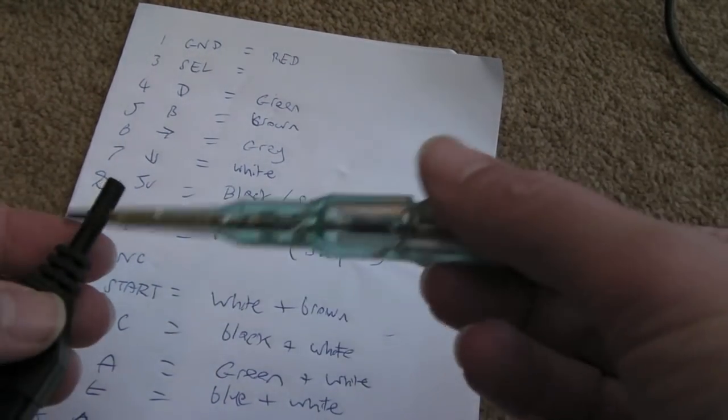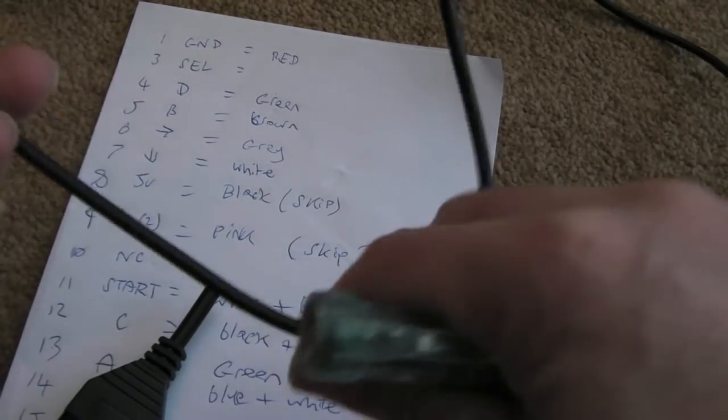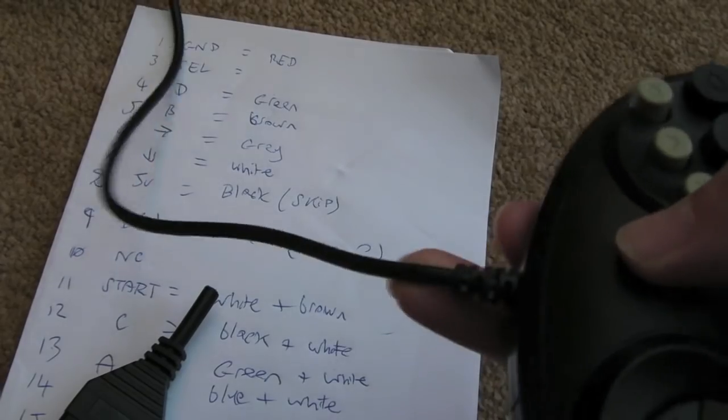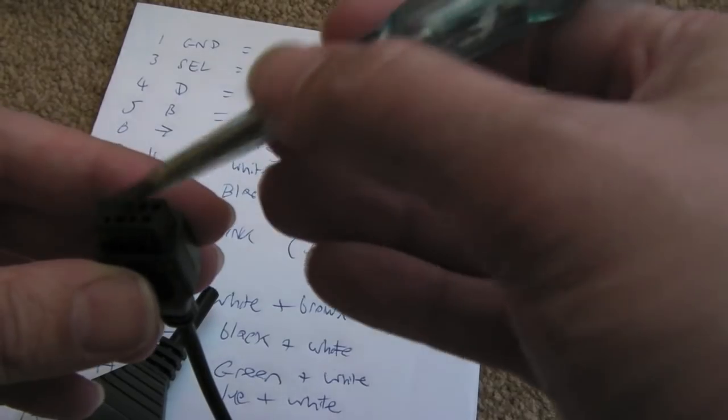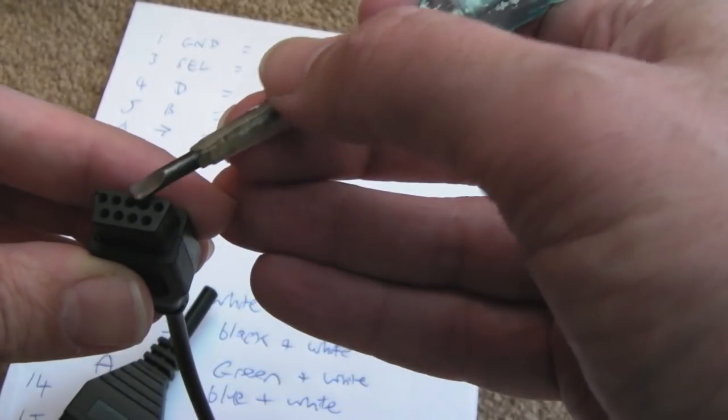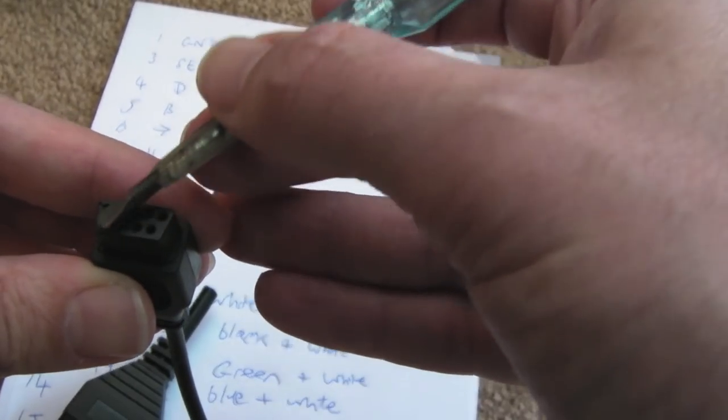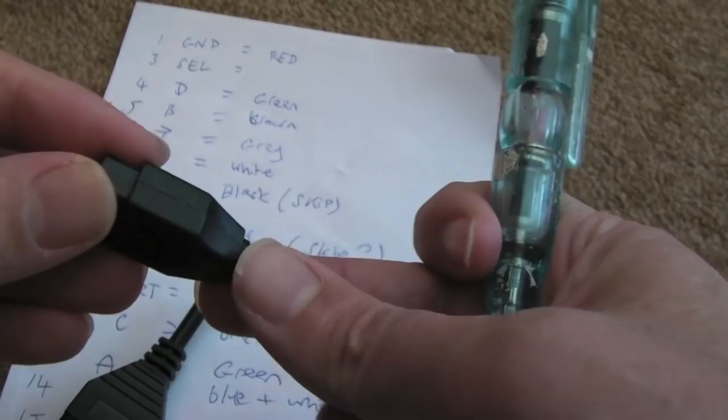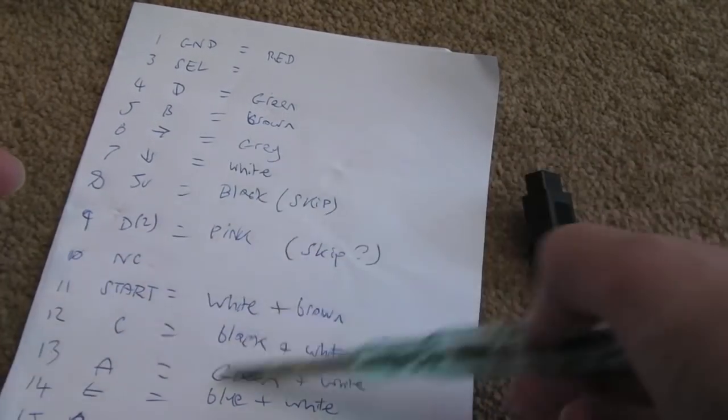The important thing is I know the colors, so it should be a breeze to wire this up. All I need to do is disconnect this cable and use the multimeter again to work out the top ones. You've got up, down, left, right, fire or it might be up, down, left, right, select and then fire's the sixth one.